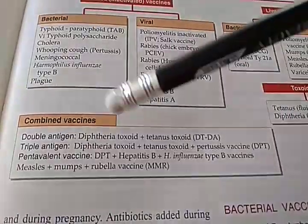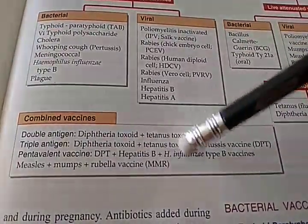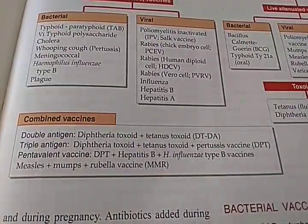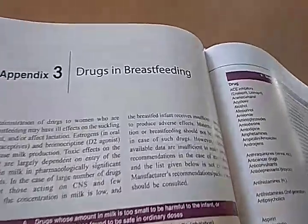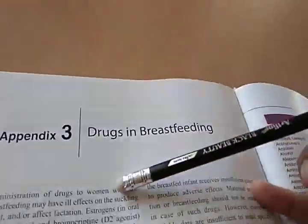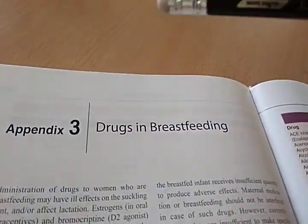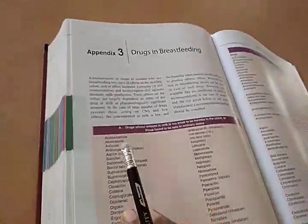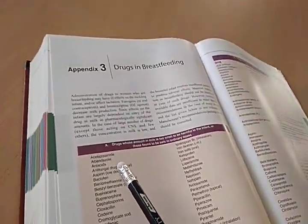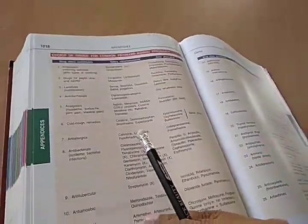Combined vaccines: pentavalent vaccine has DPT plus hepatitis B plus Haemophilus influenzae. There are also special appendices telling you the drugs which you can give in pregnancy and drugs which you can give during breastfeeding, which could be useful.